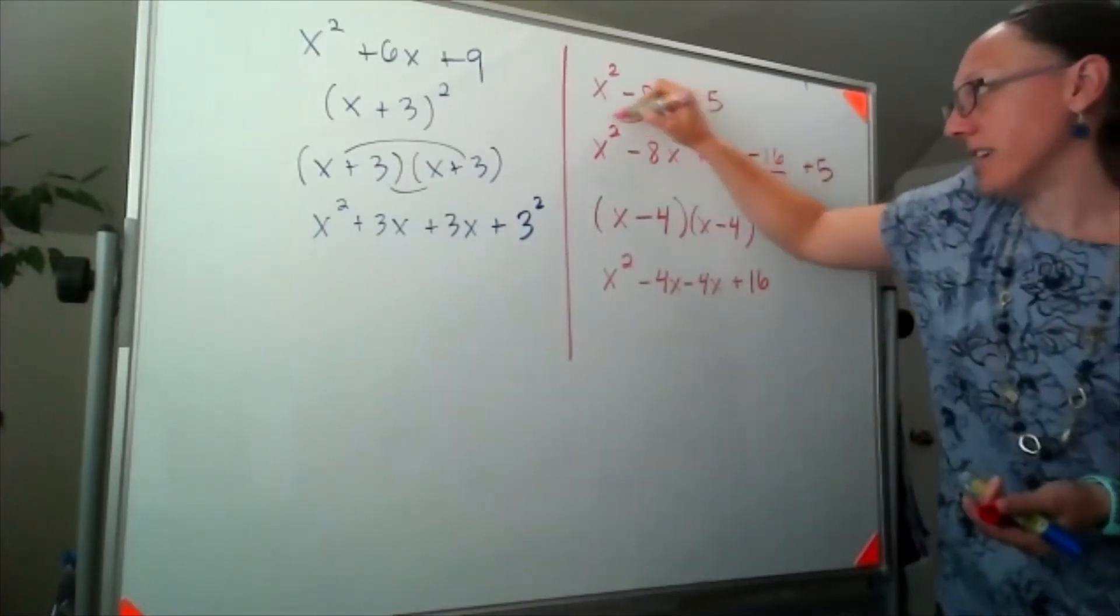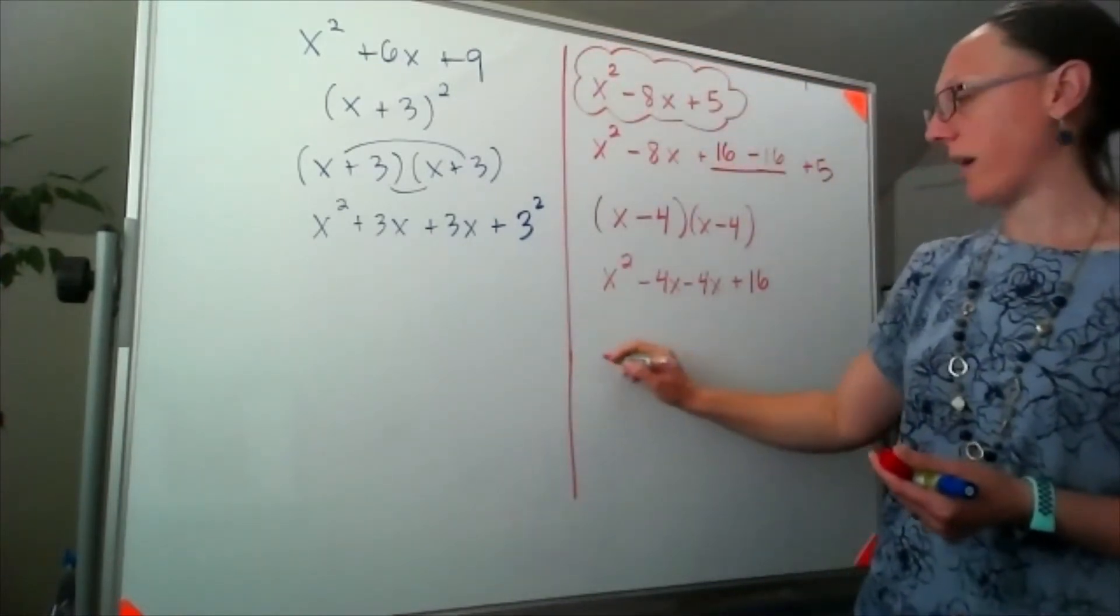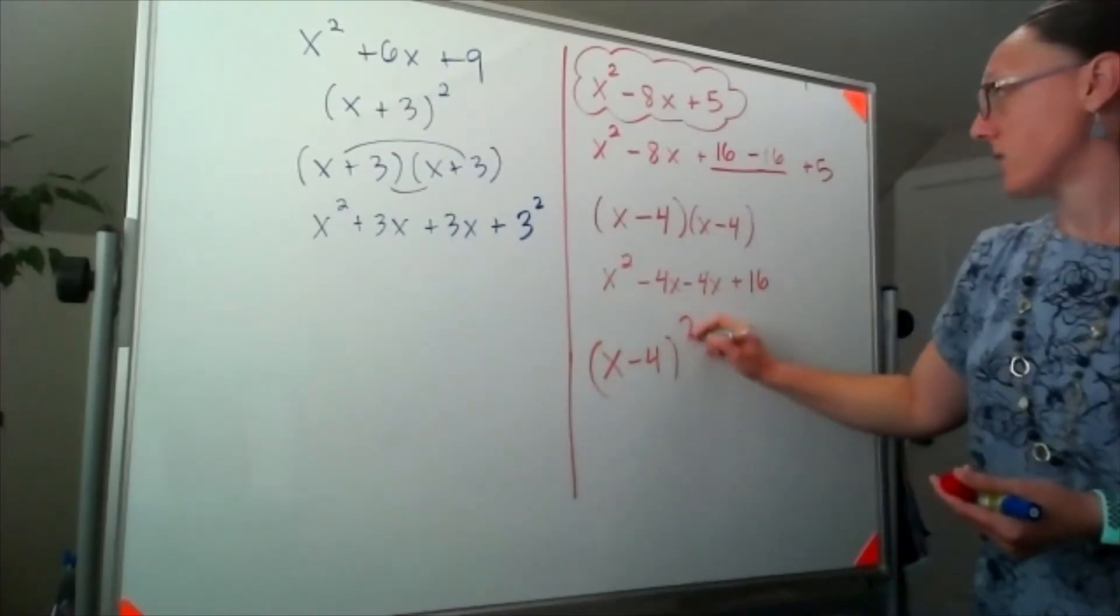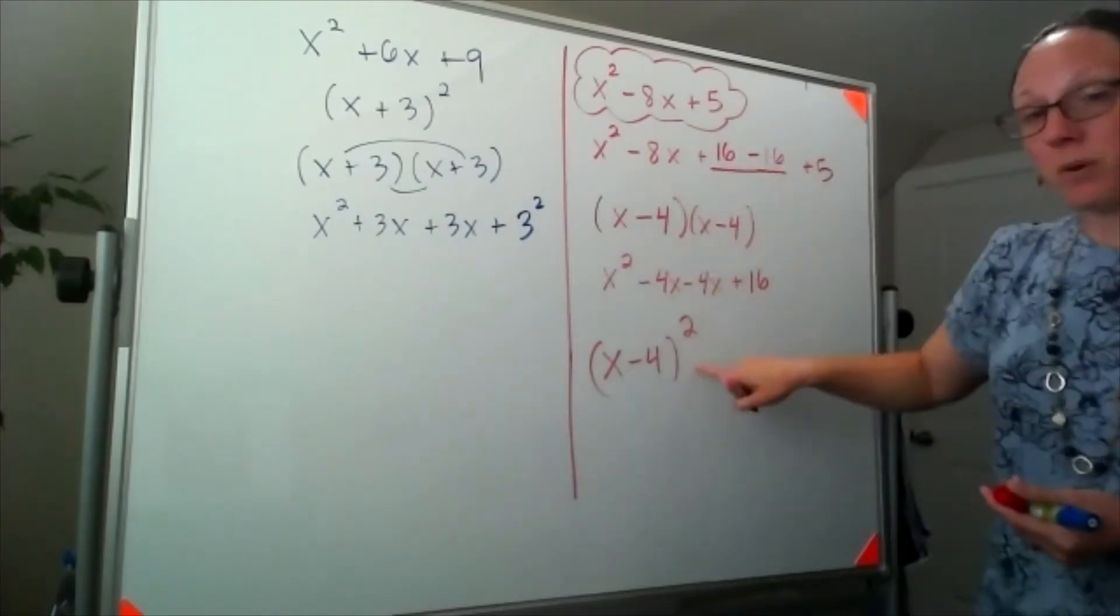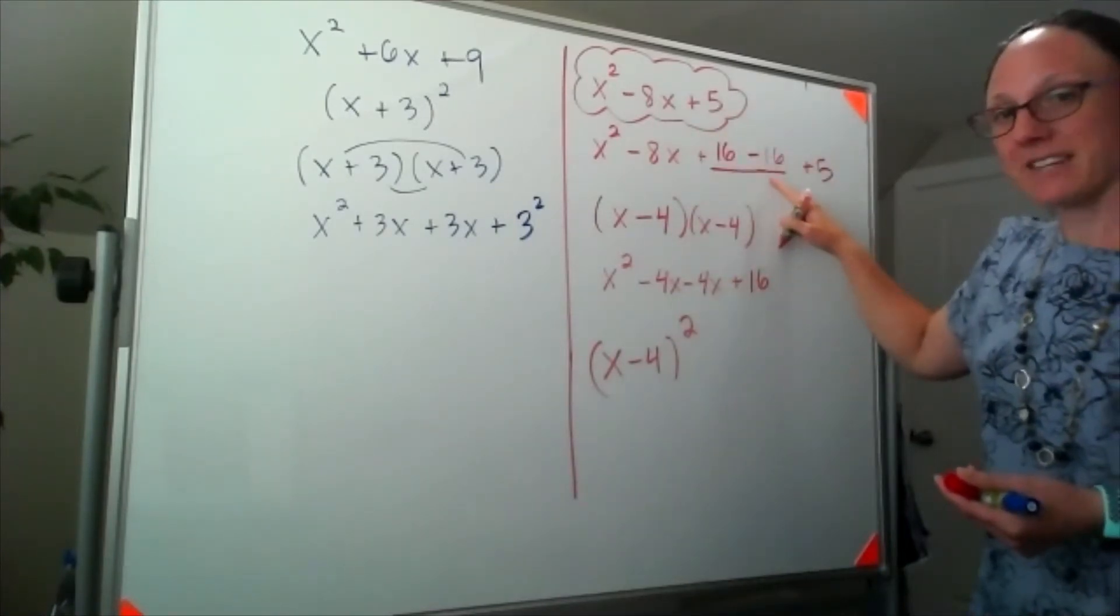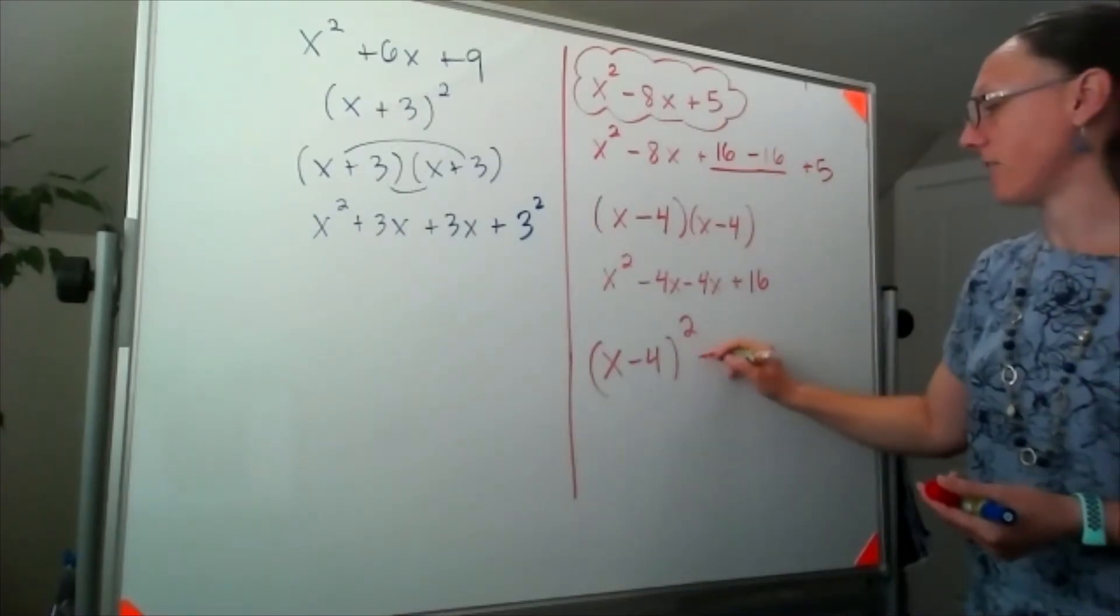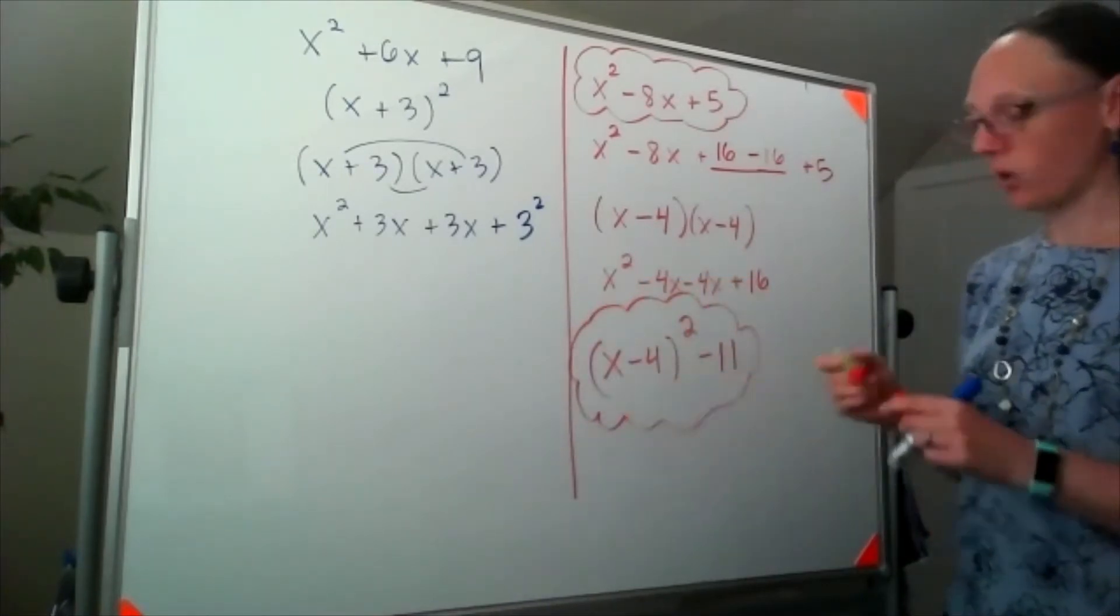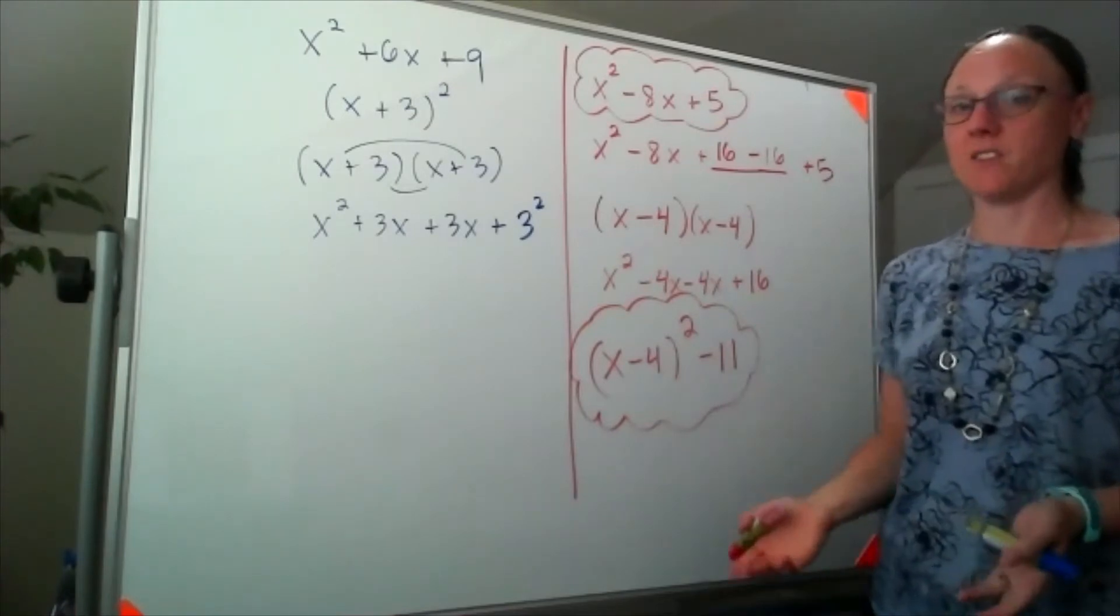So if this were my original starting point, then after completing the square, this would look like x minus 4 squared, so that 16 got used up in this part, but the negative 16 didn't. So negative 16 plus 5 should give me negative 11. So that is equivalent to what we started with, but having completed the square.